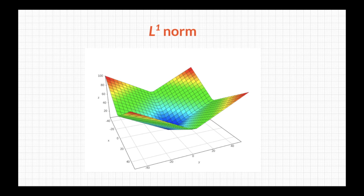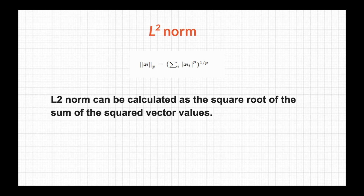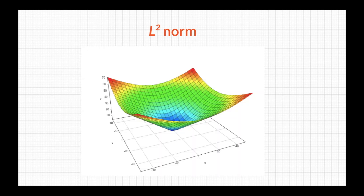Replacing p with 2 gives us the L2 norm. The L2 norm is calculated as the square root — since 1/p becomes 1/2 — of the sum of the squared vector values. This is also known as the Euclidean norm or root mean square values. Plotted on a 3D graph, the L2 norm appears a little more steep compared to the L1 norm.